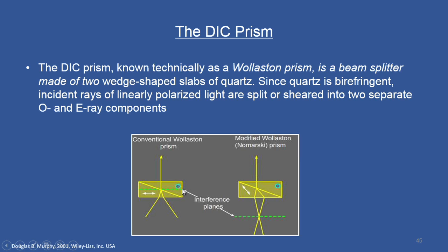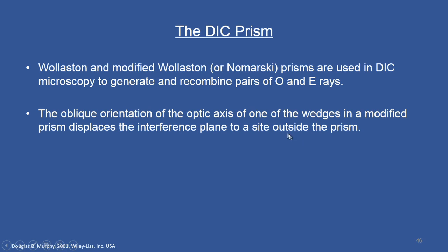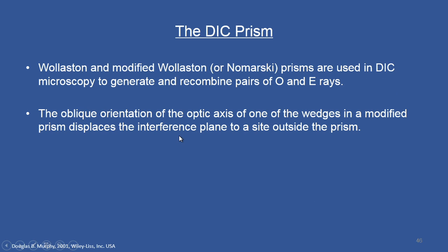The modified Wollaston prism, or Nomarski prism, also has two wedge-shaped slabs, but their orientation is slightly oblique. As a consequence of the oblique orientation, the interference plane is shifted out of the prism. This is what distinguishes the Nomarski prism from the conventional Wollaston prism. The oblique orientation of the optic axis of one wedge in the modified prism displaces the interference plane to a site outside the prism.